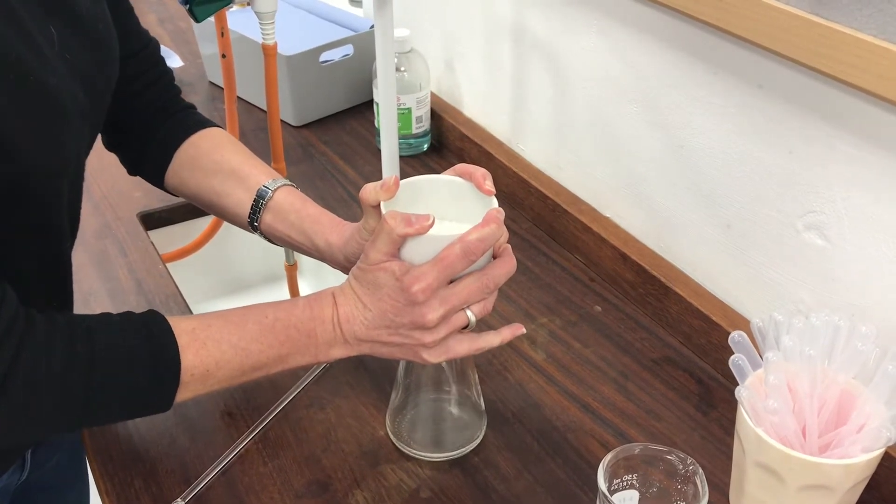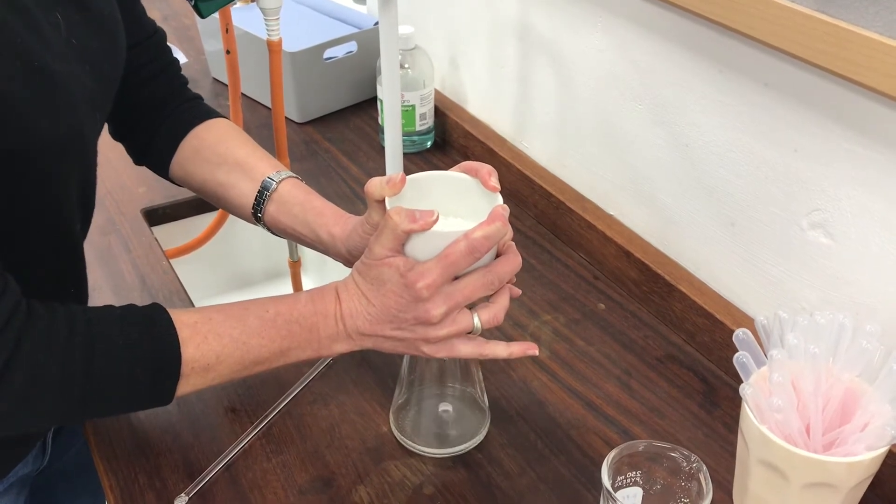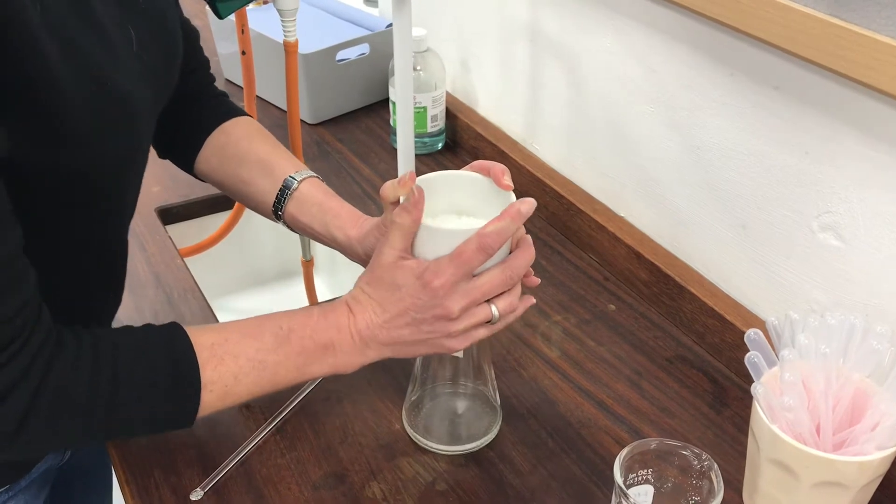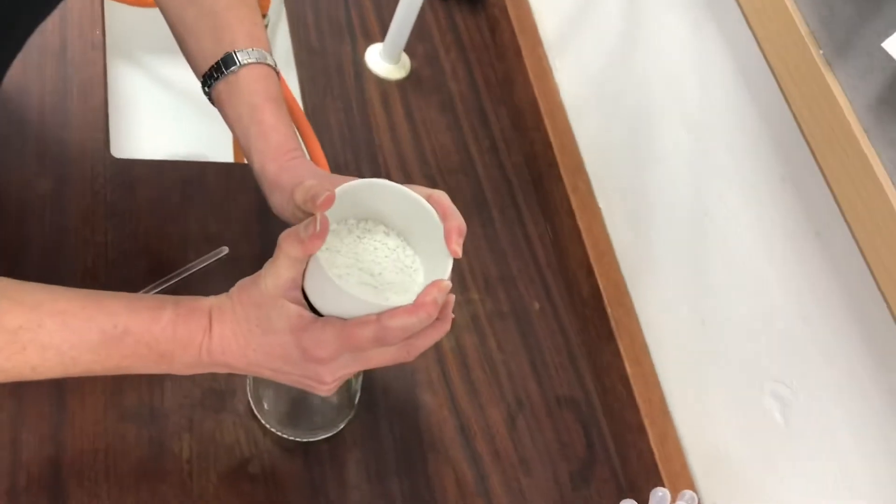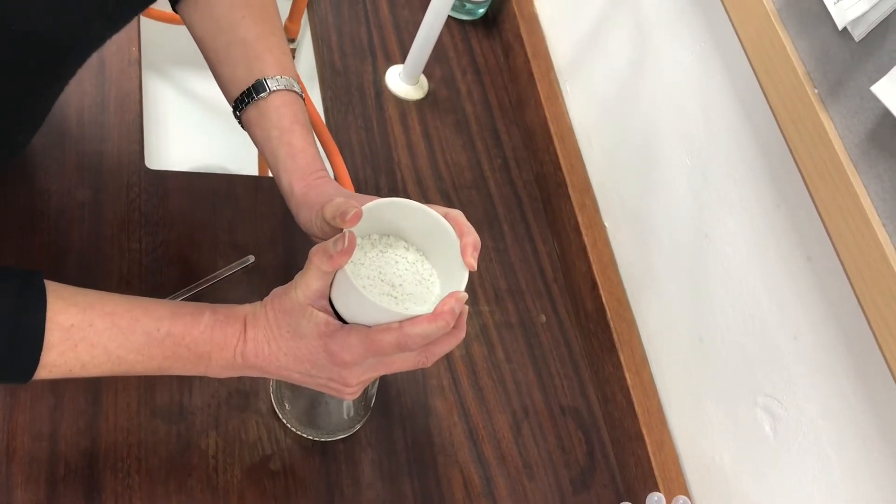I'm holding the Buchner funnel really tight down into the conical flask here to make sure there's a really good seal. And I get really good suction coming through my paper. So if you can see in the top of the funnel now, you can see there's lots of little nasty, gritty looking white particles of my product. And that's going to need recrystallizing.